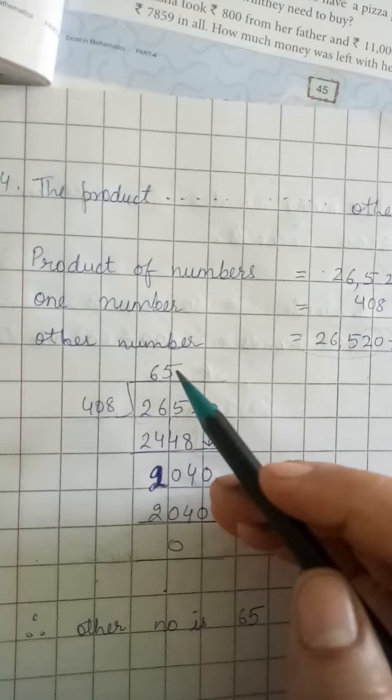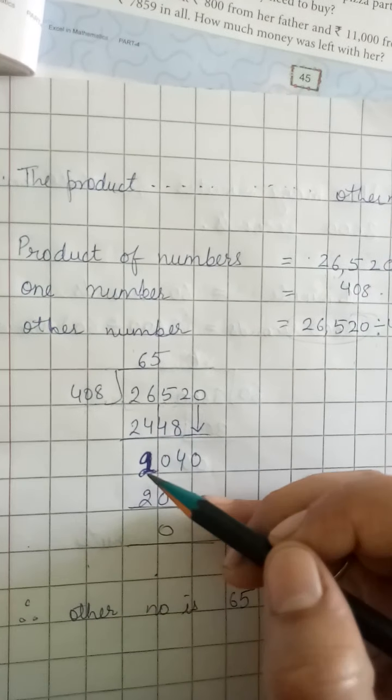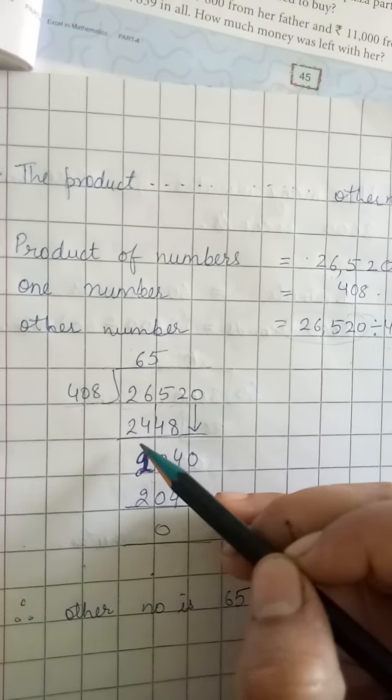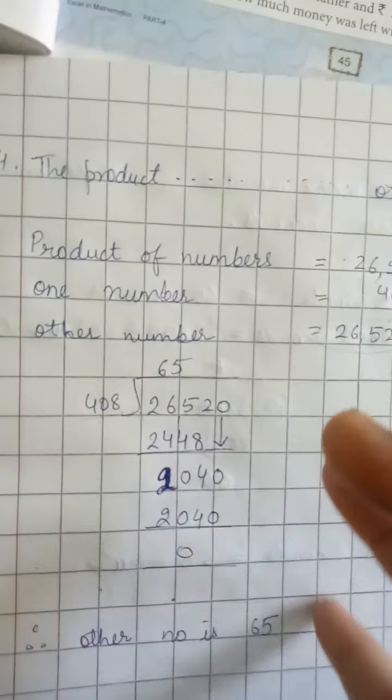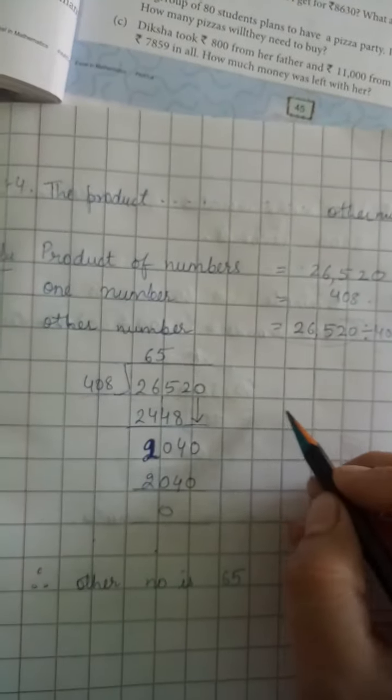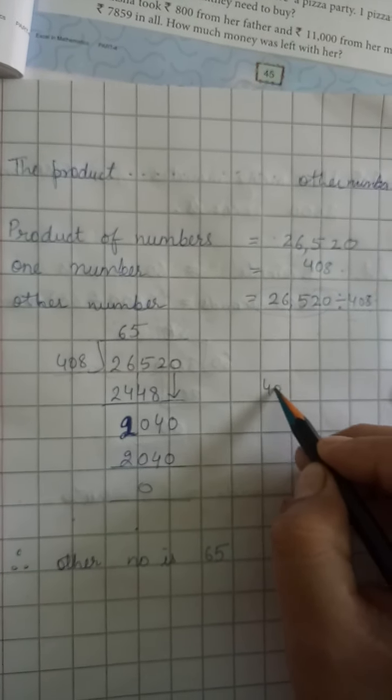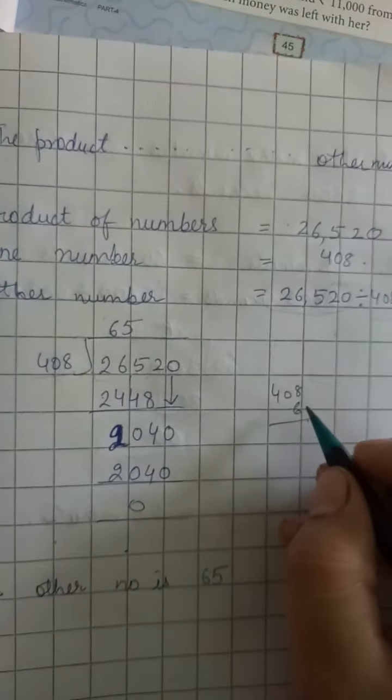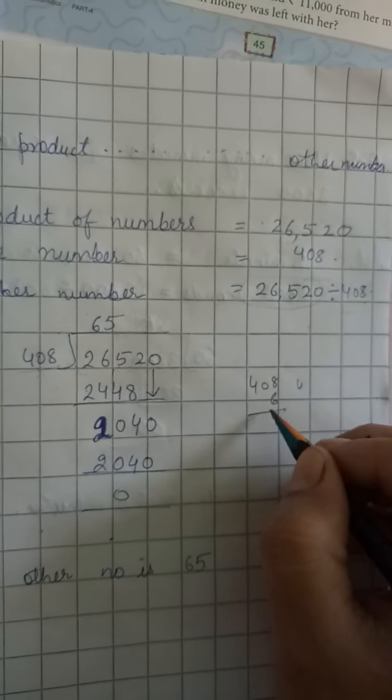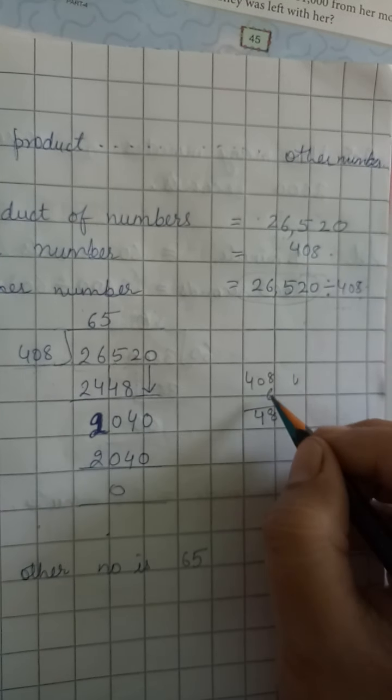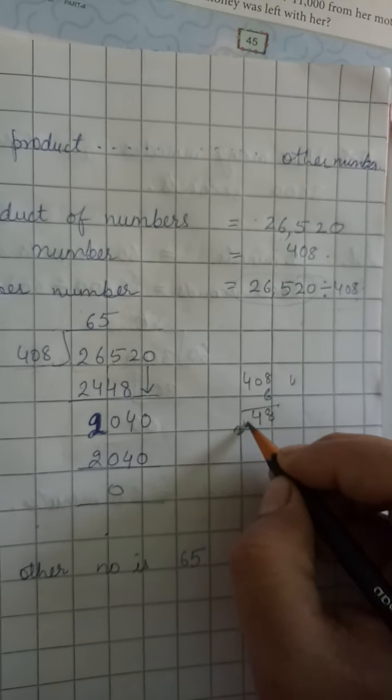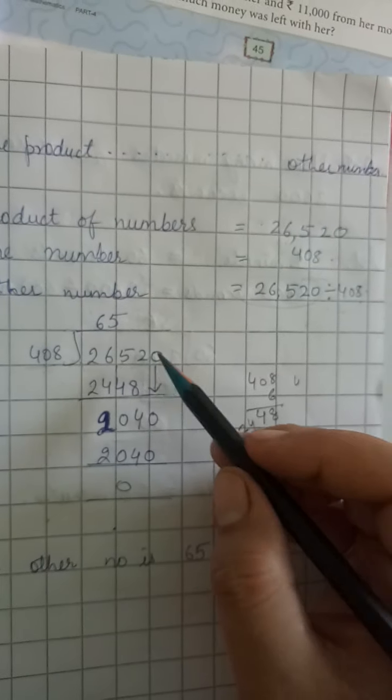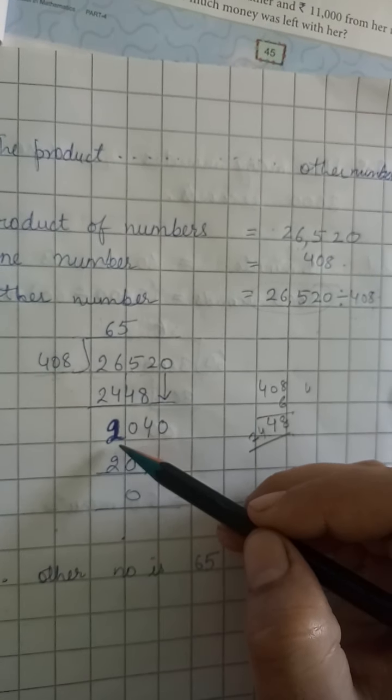Now let's take 408 × 6. 6 × 8 is 48, 0, 4, so it comes as 2,448. Now let's subtract. We get 204.